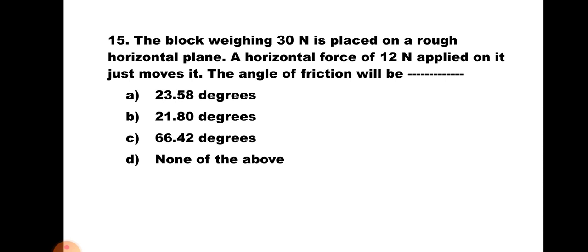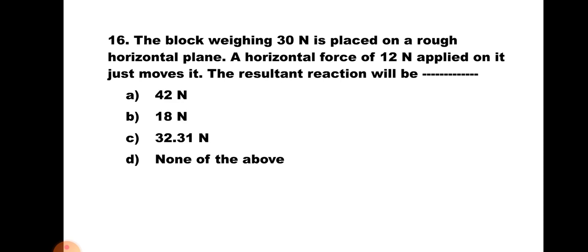Question number fifteen: A block weighing 30 N is placed on a rough horizontal plane. A horizontal force of 12 N applied on it just moves it. The angle of friction will be — a) 23.58°, b) 21.8°, c) 66.42°, d) None of the above. μ = tan φ, so φ = tan⁻¹(μ) = tan⁻¹(0.4) = 21.8°. Hence the correct answer is b) 21.80°.